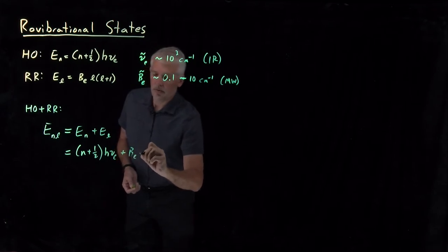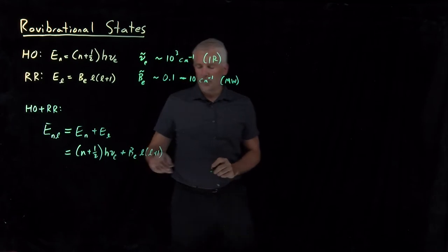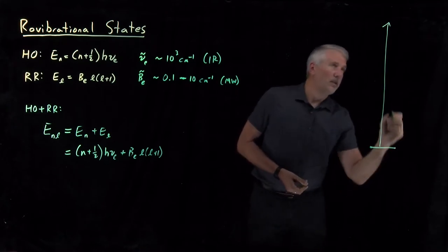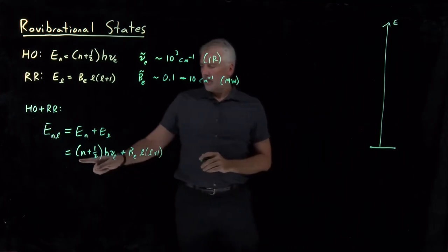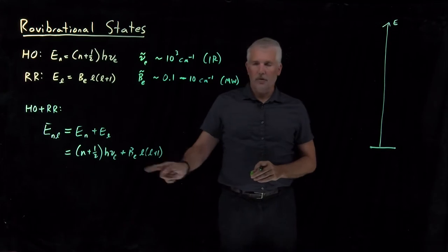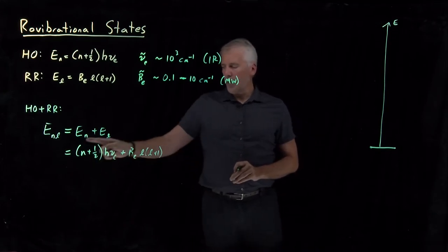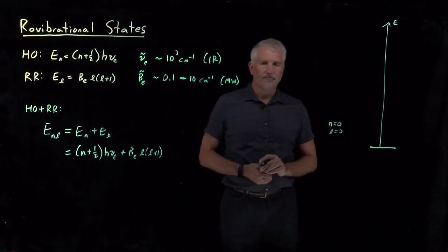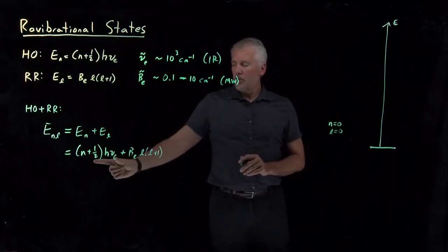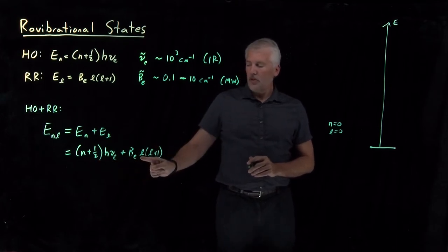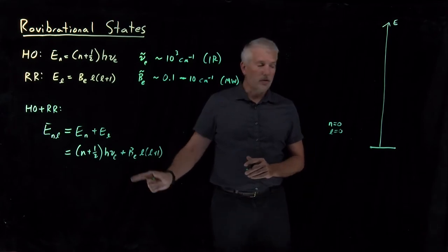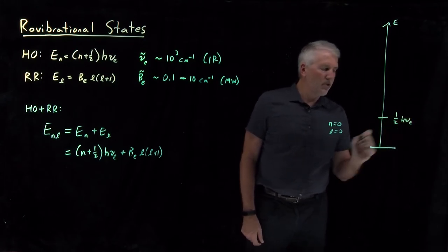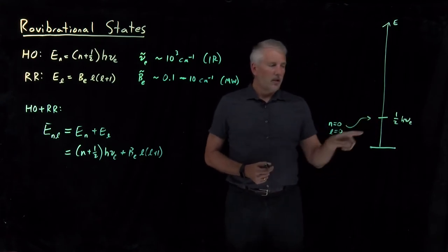Where it gets interesting is when we see what those energy states look like. So let's draw an energy ladder. These quantum numbers mean exactly the same thing they did for the harmonic oscillator and for the rigid rotor. The ground vibrational state will be when n equals 0. When n equals 0 and l equals 0, the vibrational contribution is still going to be one-half h-nu, and the rotational contribution is just going to be 0. So the energy level for the molecule would be one-half h-nu.